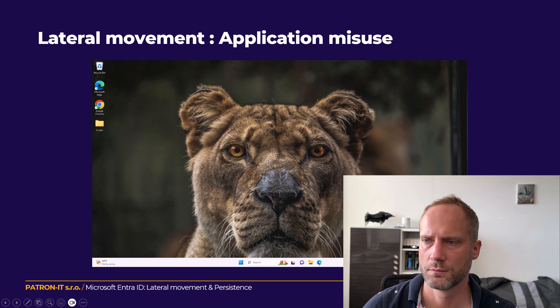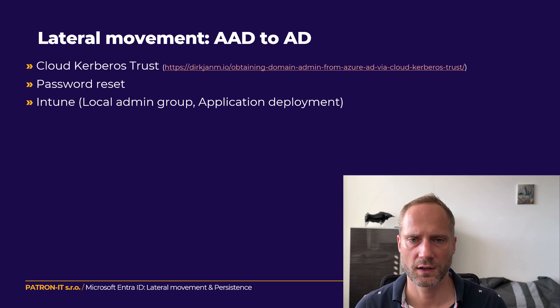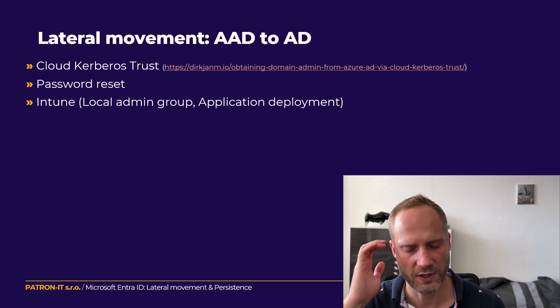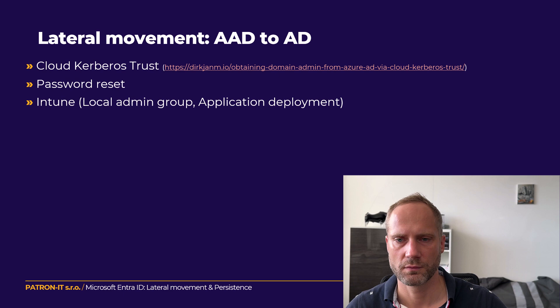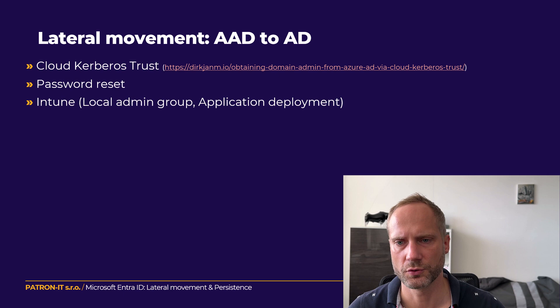Let's move on. Lateral movement can also occur between Entra ID and on-premise Active Directory. The attacker can misuse Seamless SSO, Kerberos trust, pass-the-hash, do password reset if password synchronization is bidirectional, or use Intune to push custom scripts, custom applications, or add users to local administrator groups on computers managed by Intune.